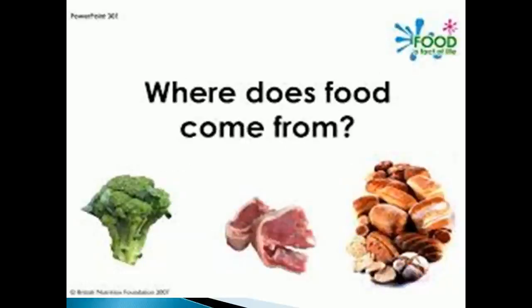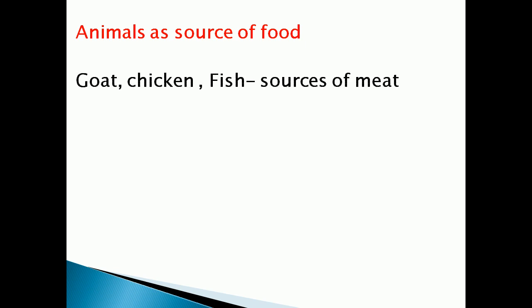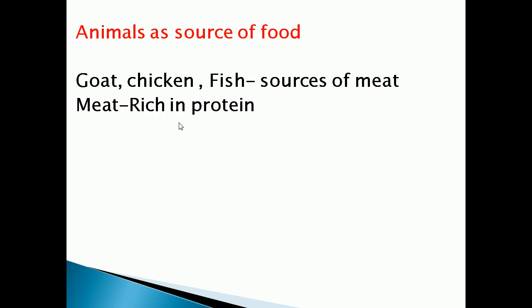We know that animals can be used as food. Examples of animals which can be used as food are goat, chicken, and fish. We know that these are the sources of meat. Meat is rich in protein. Why we should have meat as our food? Because we will get protein from meat.